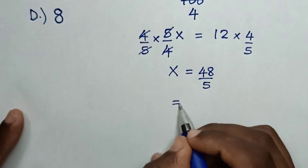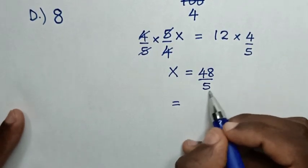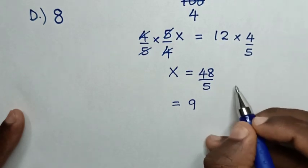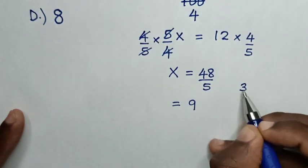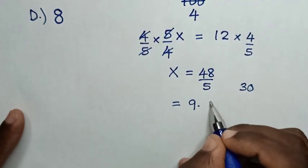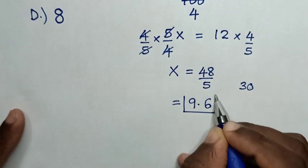Then, this will be equal to—48 divided by 5 is 9, by 45. So, 48 minus 45 is 3. Then, here we place decimal, then we add 0. 30 divided by 5 is 6. So, this is our final answer.